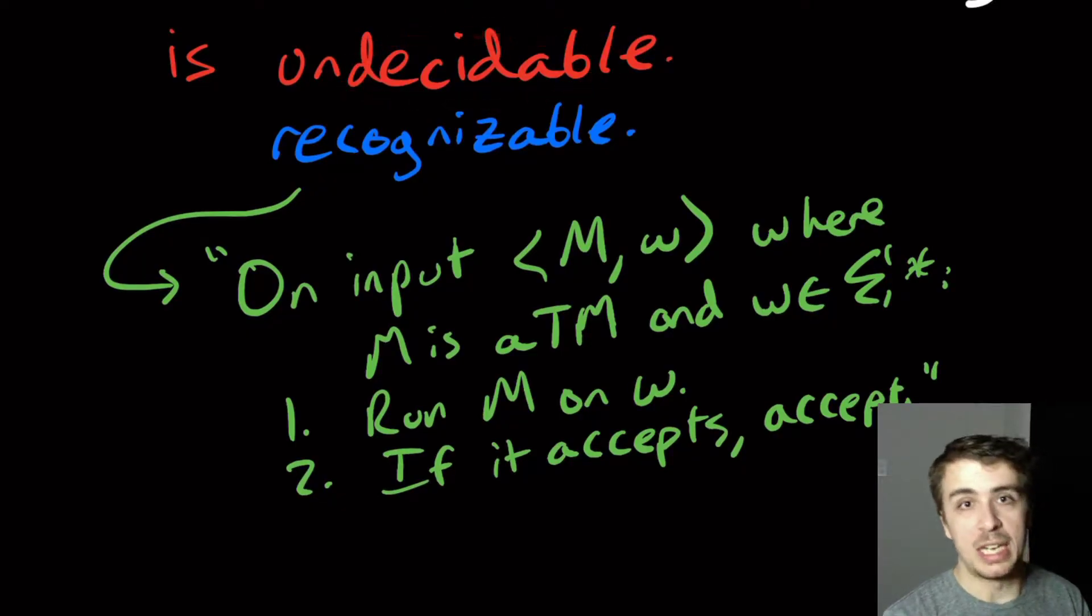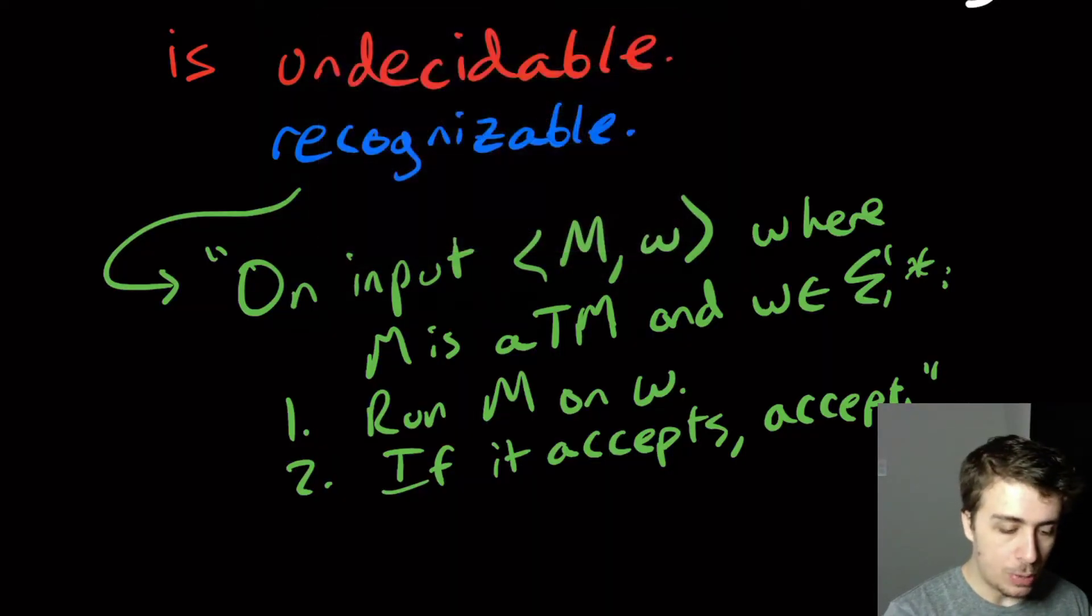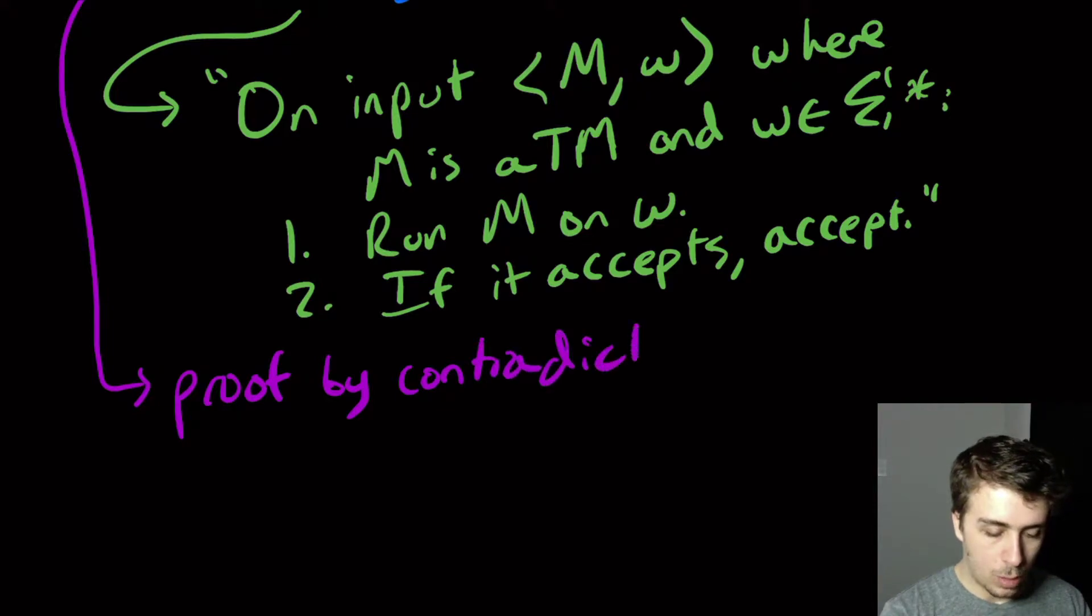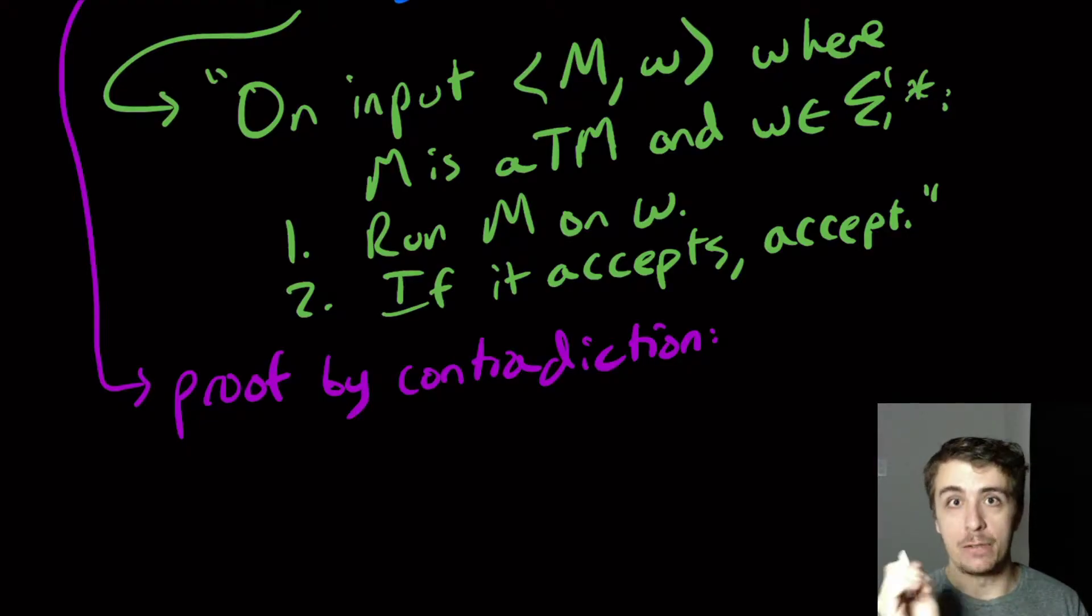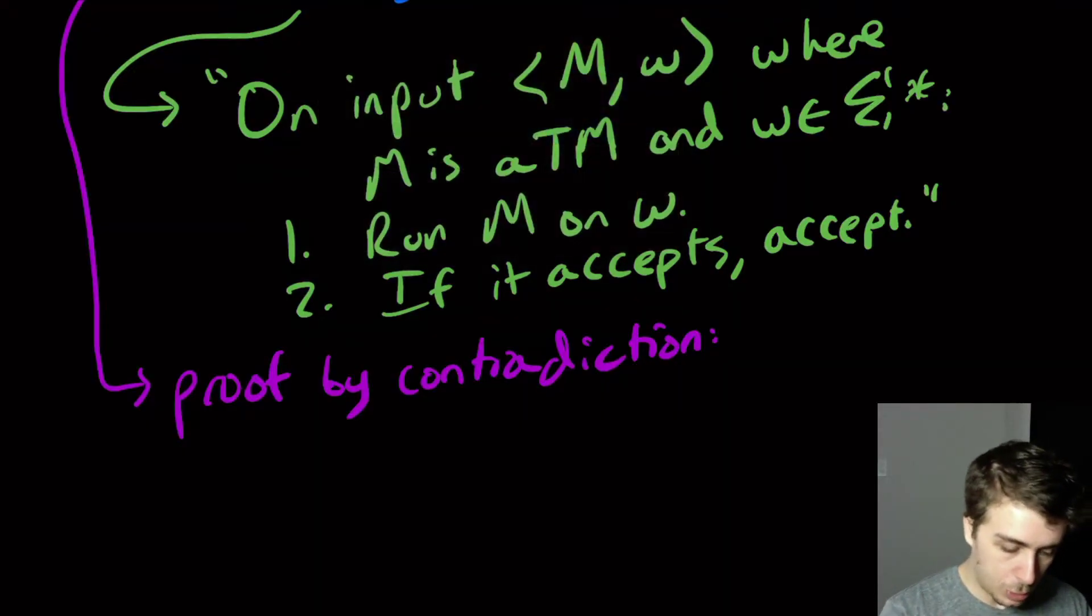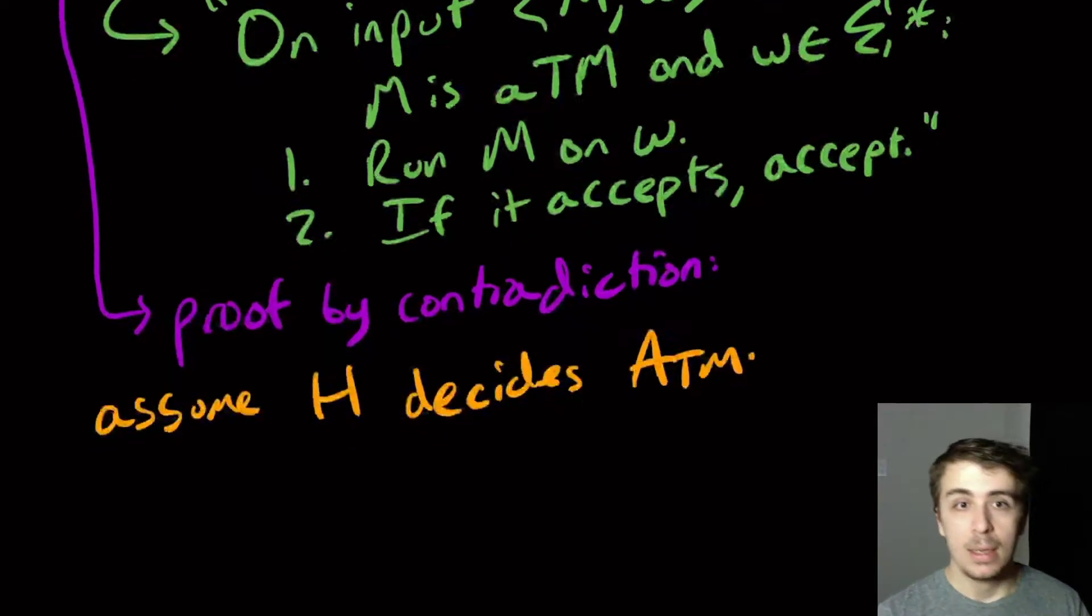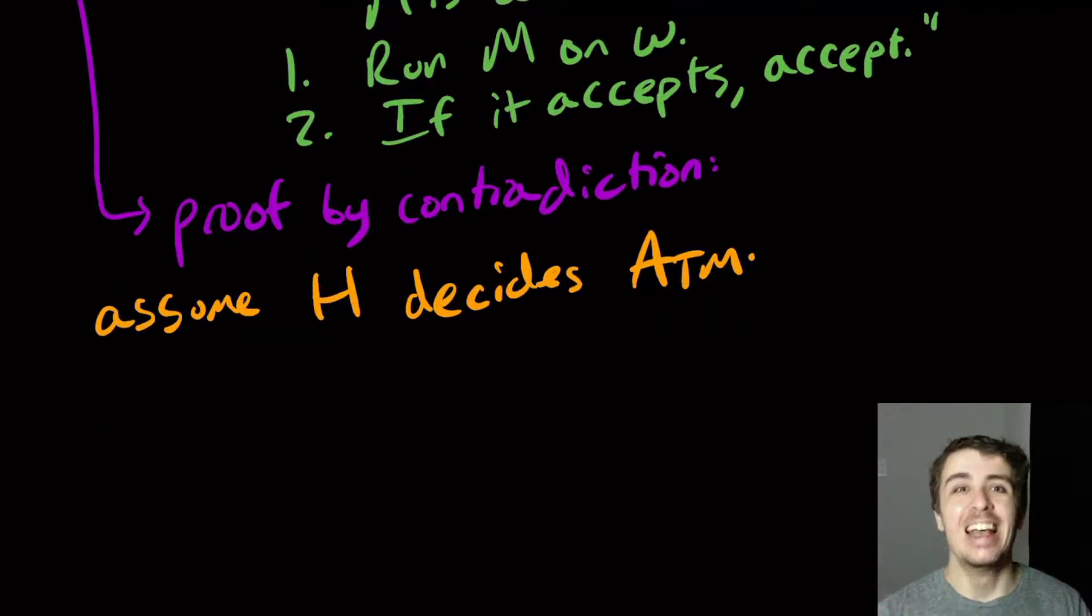So how do I show that this is undecidable and that there is no possible algorithm for this? So the way, the common way of doing this, and it's a classic proof is a proof by contradiction. So what we're going to assume is that there is a Turing machine that is a decider for ATM and then derive some kind of contradiction. So we're going to assume that H decides ATM. H stands for hypothetical. We're assuming that this machine really does decide the ATM problem.